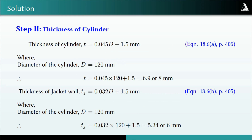In the next step we determine the thickness of the cylinder wall, t = 0.045D + 1.5 mm. Substituting D = 120 mm gives t = 6.9 mm, rounded up to 8 mm. The jacket wall thickness Tj (equation 18.6B, page 405) is Tj = 0.032D + 1.5 mm, giving Tj = 5.34 mm, rounded to 6 mm.